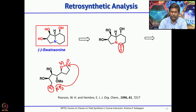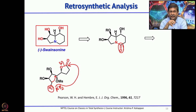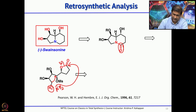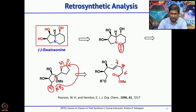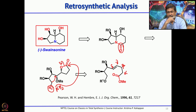The NH₂ first attacks the mesylate to form a 5-membered ring, then that NH attacks the lactone and opens it to give the corresponding 6-membered compound. This can be obtained from this gamma-delta unsaturated ester. If you have a gamma-delta unsaturated ester and do a dihydroxylation, one of the hydroxyl groups will immediately cyclize to form a 5-membered lactone and the other will be a free alcohol.